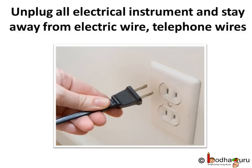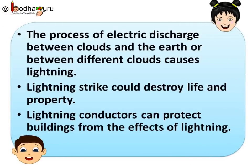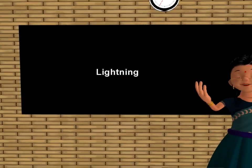Because lightning, as we know, is an electrical discharge. So now you understand what is lightning and how to protect yourself from lightning. The process of electric discharge between clouds and the earth, or between different clouds, causes lightning. Lightning strikes could destroy life and property. Lightning conductors can protect buildings from the effects of lightning. So take enough precautions during thunderstorm and lightning, and be safe. That's all for now — bye bye, children.